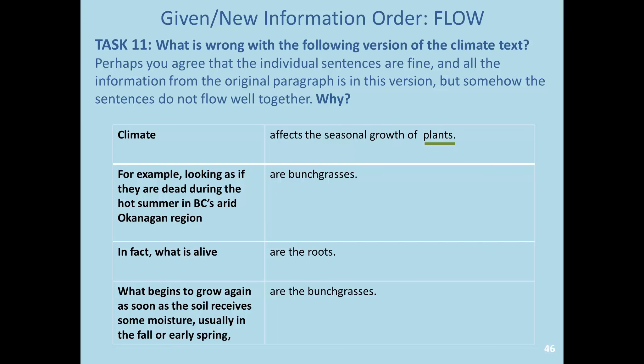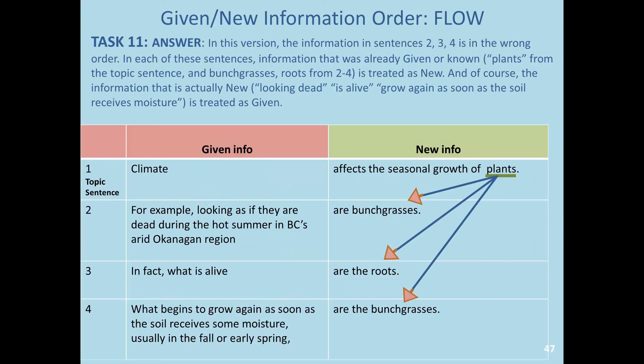Let's look at flow. Please read the following and tell us what's wrong with this version of the climate text. Perhaps you agree that the individual sentences are fine, and all the information from the original paragraph is in this version. But somehow the sentences do not flow well. Why? Pause the video here. The answer is that in this version, the information in sentences two, three, and four is in the wrong order.